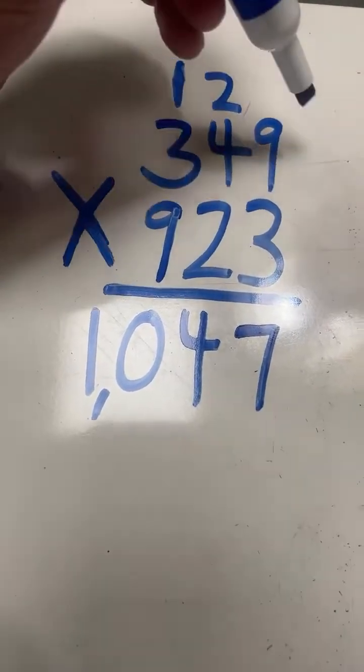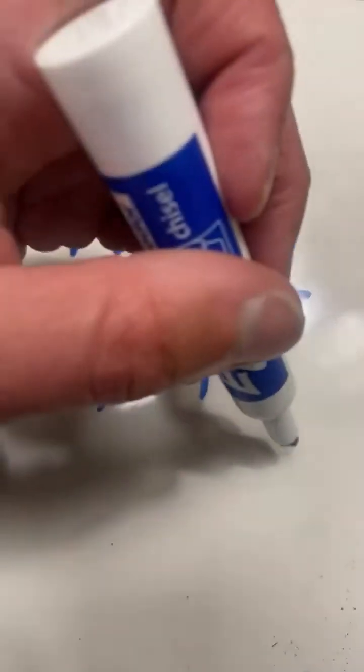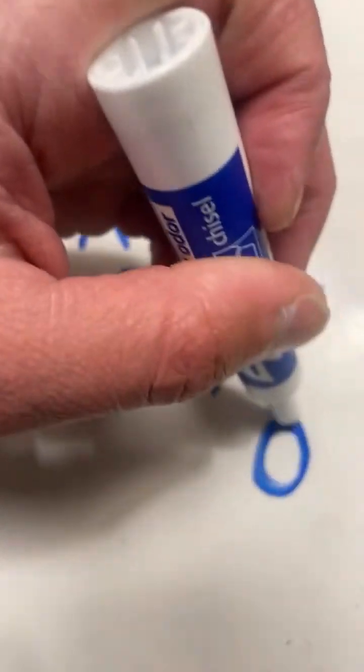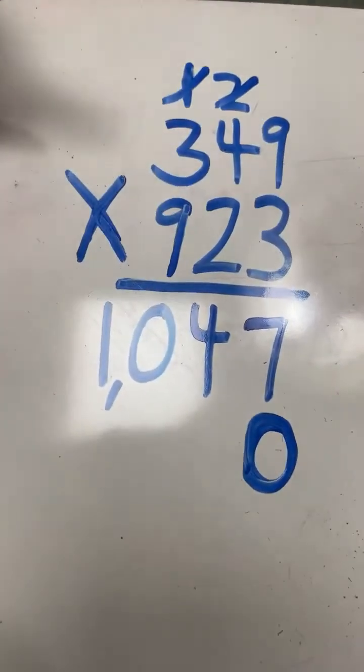Now before we multiply the top 3 digits times the bottom digit in the tens place, we put a 0 in the ones place since both digits in the ones place have been multiplied.